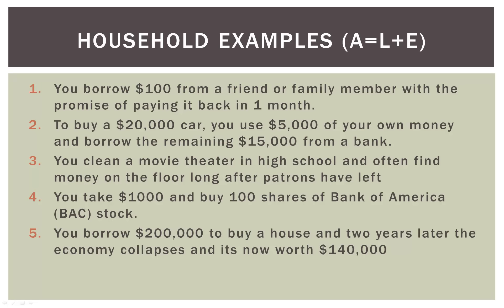Number two is a little more complicated. Let's say to buy a $20,000 car, you use $5,000 of your own money from your savings account and borrow the remaining $15,000 from a bank. You use $5,000 of your own assets, which gets transferred into the car — reducing the asset side to $15,000. You basically transferred one asset, cash, for another, part of the car. So you have a $15,000 asset on the left and a $15,000 liability — the bank loan — on the right. That balances out.